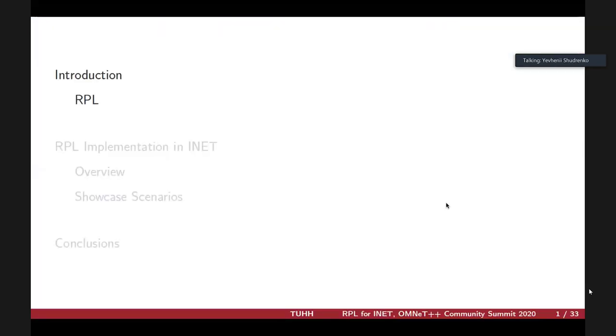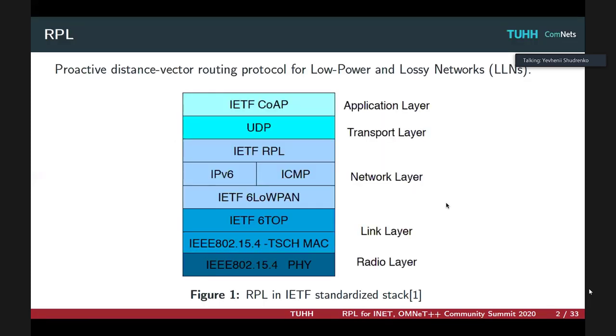It's one of the most common and standardized distance vector routing protocols used in low power and lossy networks. It's quite useful for wireless sensor networks and supports great scalability features, energy efficiency, and is designed to enable routing in unstable and unreliable networks.